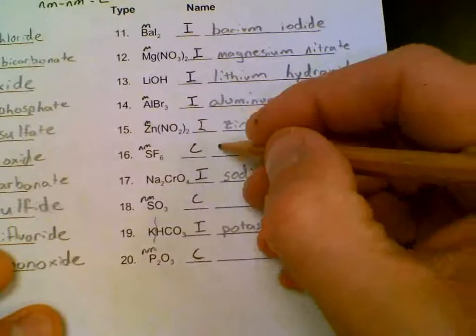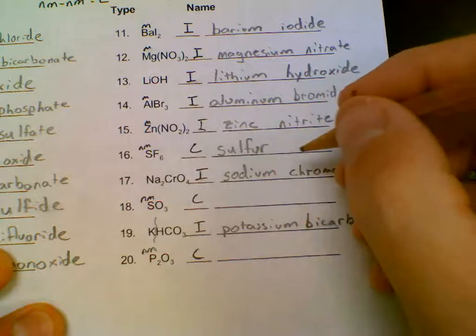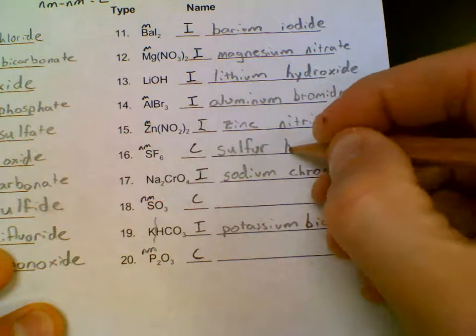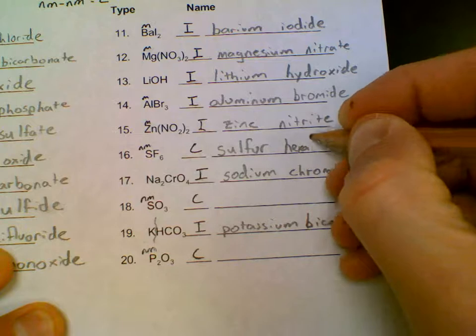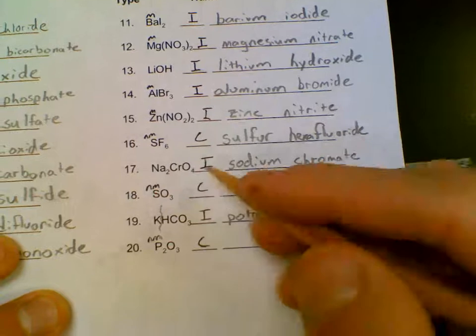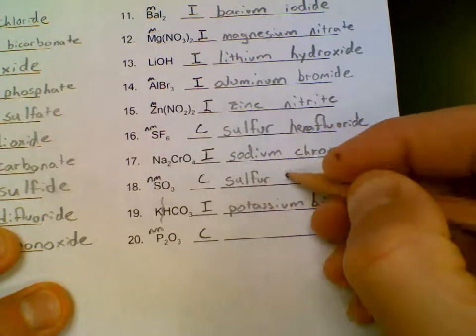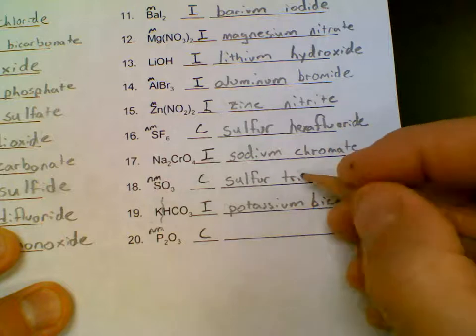On the right-hand side, no prefix, sulfur, and then the prefix for 6 is hexa, hexafluoride. Sulfur, tri-prefix for 3, oxide.